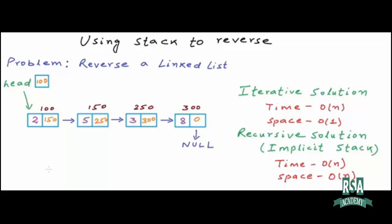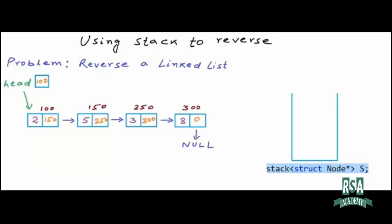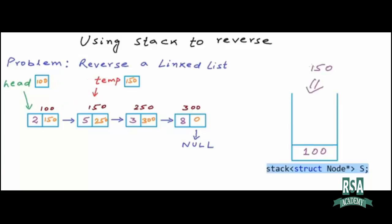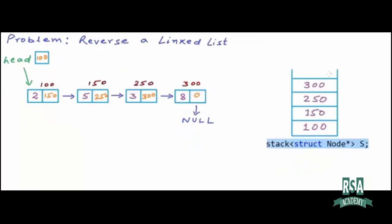Now let's see how we can use an explicit stack to solve this problem. I have drawn the logical representation of an empty stack. In the program, this will be a stack of type pointer-to-node. I am going to traverse the linked list using a temporary pointer to node. As I visit each node, I push its address onto the stack. So first 100 goes onto the stack, then 150, then 250, and finally 300.